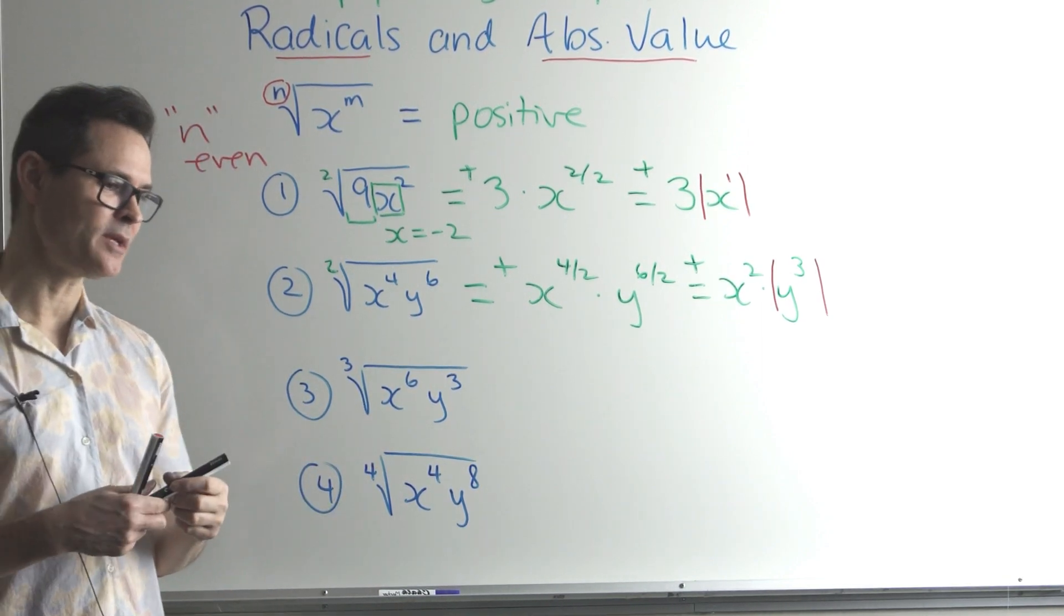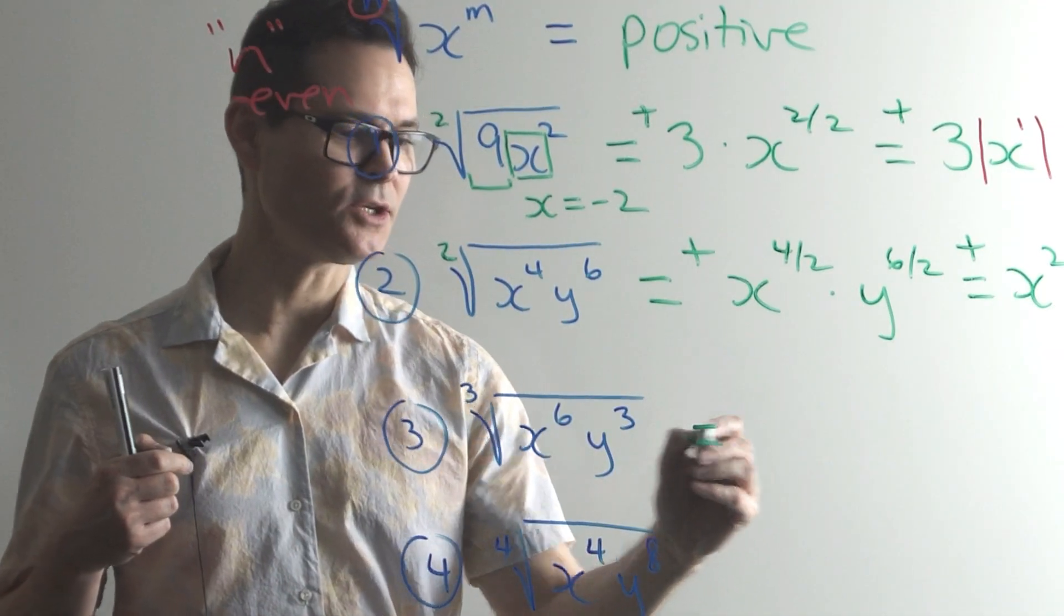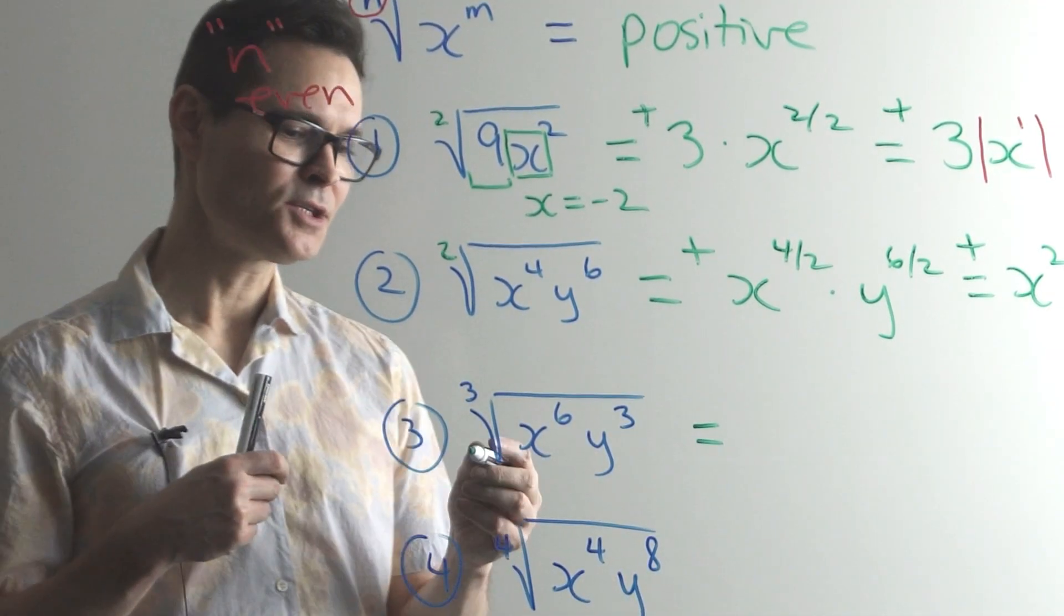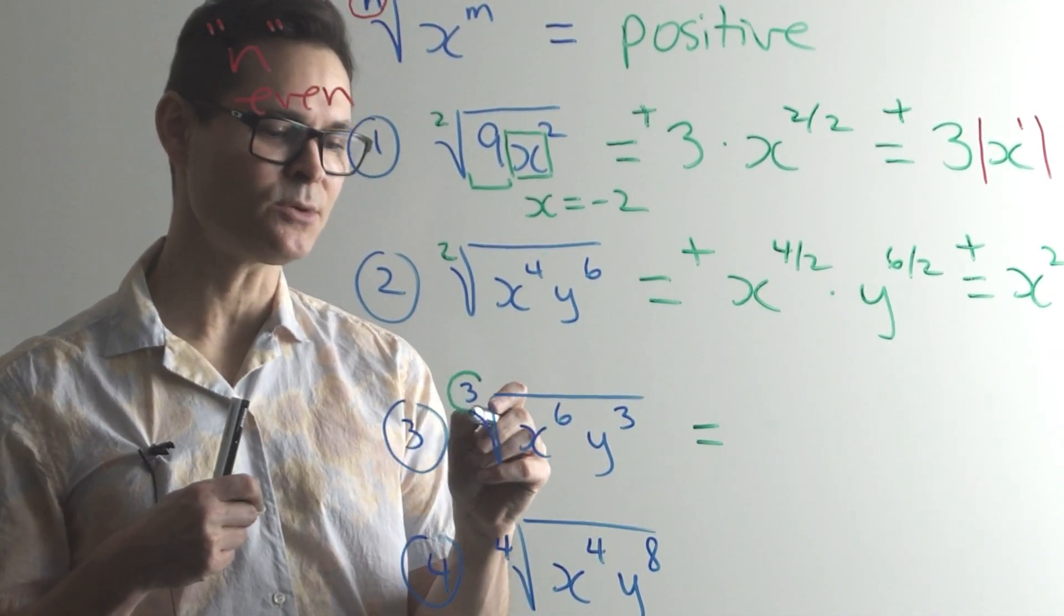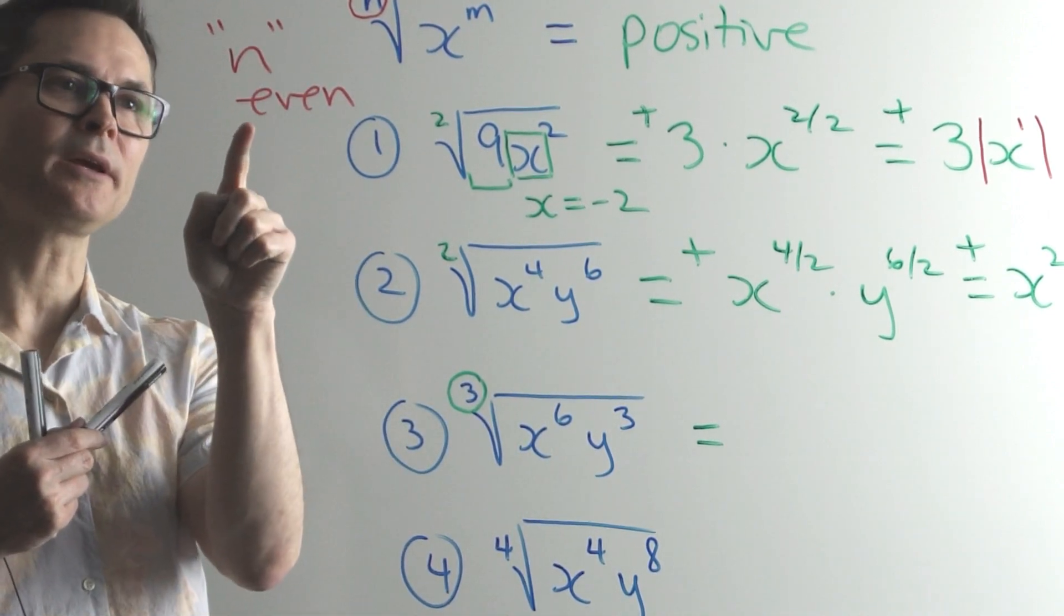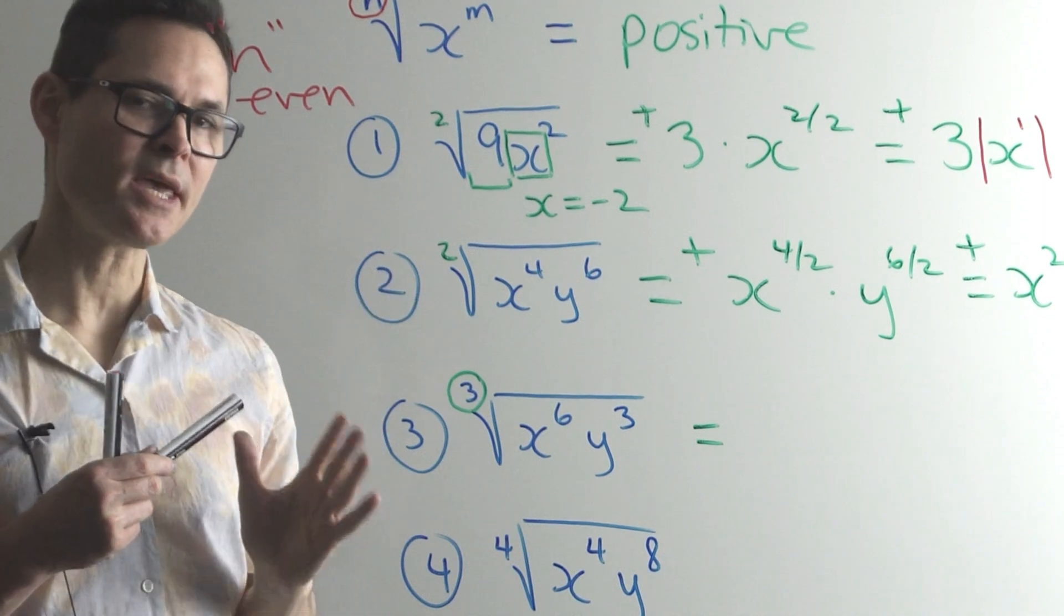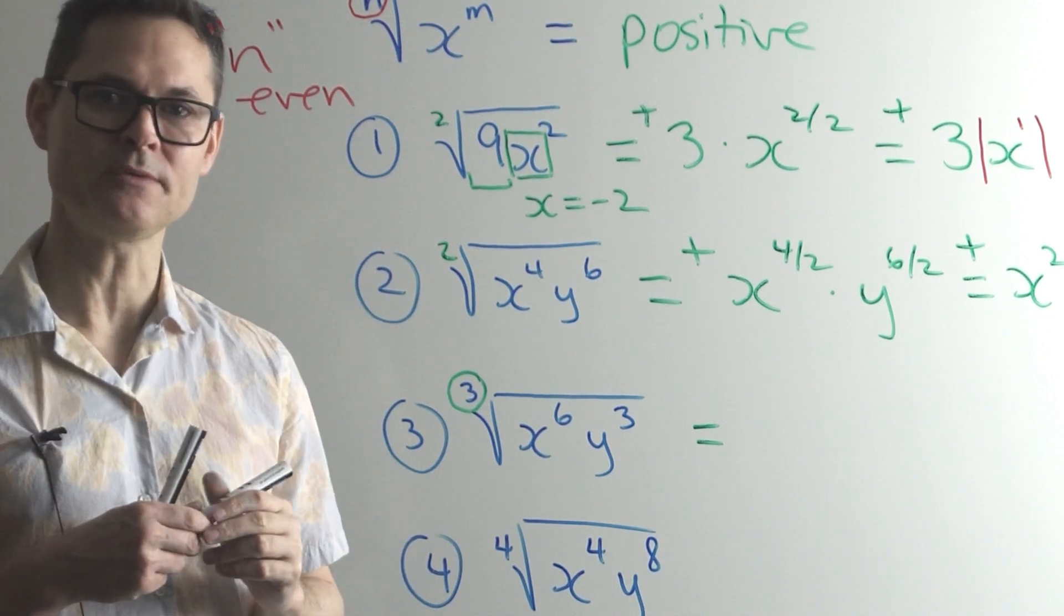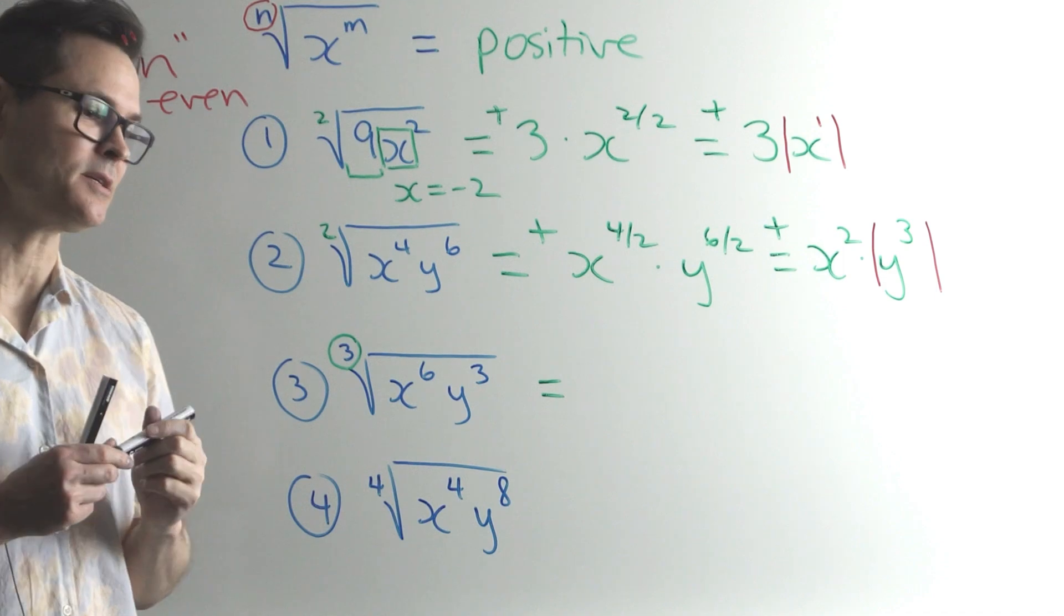Let's take a look at the next one here. So we get into a little bit of a roll here. Check here. Notice now the outside index is 3. This rule is only applicable when n is even. So in this case here, we don't use absolute value brackets. You don't need them for odd indices.